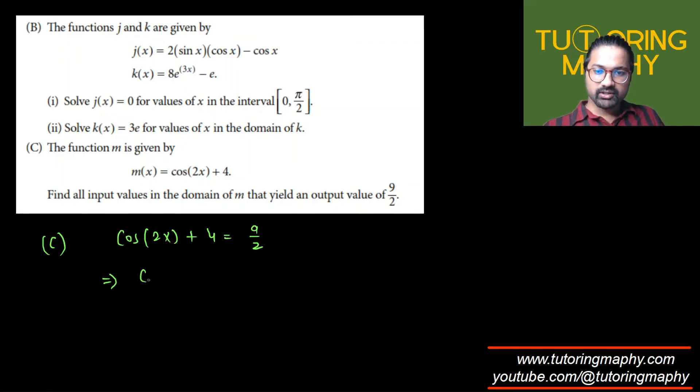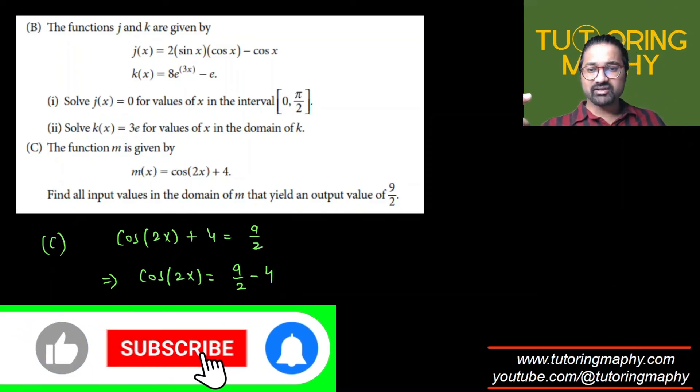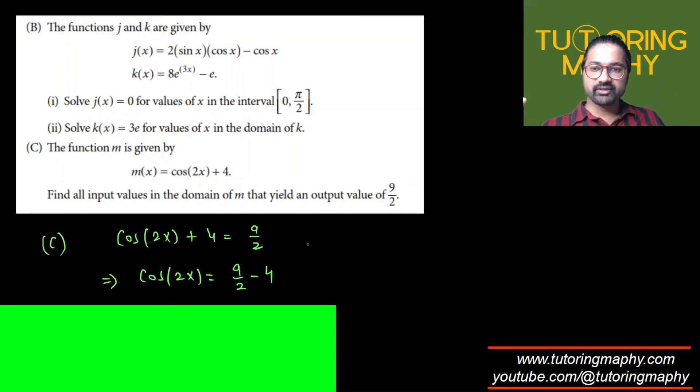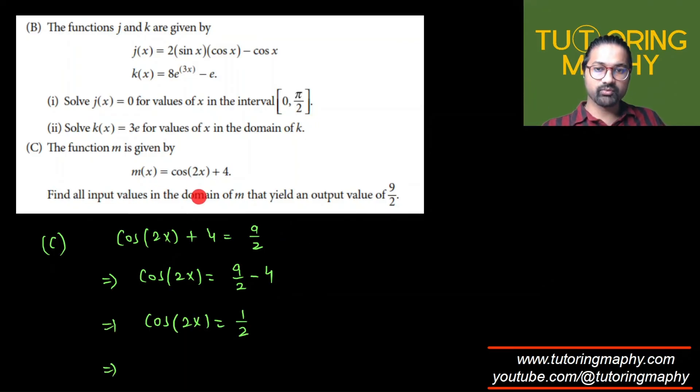So they want cos(2x) + 4 should equal 9/2. If this is 9/2, we're just going to subtract 4 both sides. That's going to be 9/2 - 4. So if you write 9/2 - 4, making the common denominator of 4, it will become 8/2 because we multiply by 2 and divide by 2. So 9/2 - 8/2 is just 1/2. So this comes out as 1/2. When is cos(2x) equal to 1/2? That's the only question we have. Since they are not giving us any range, this means we have to give them a general solution because they are saying all the input values in the domain.